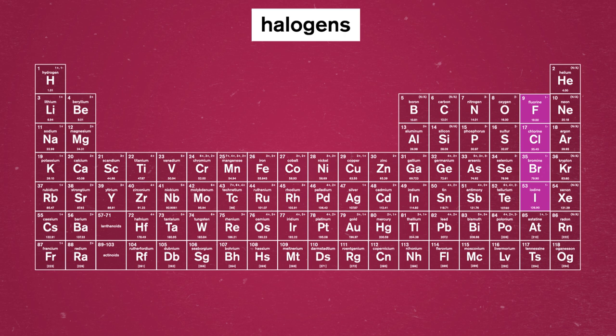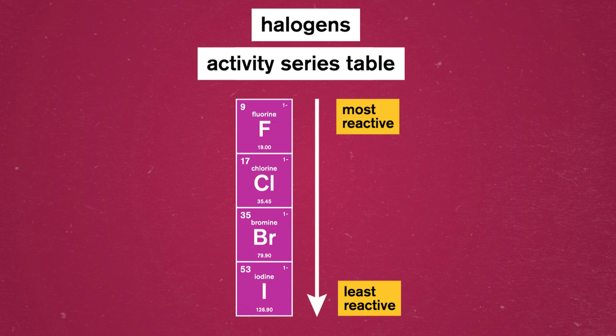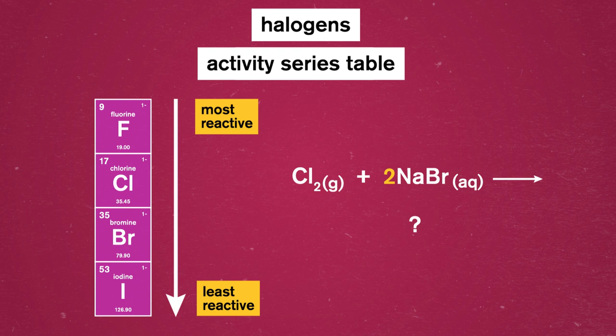Metals aren't the only class of elements to have fun tricks up their sleeves. The group of elements known as halogens also have their own activity trend, which we can view in an activity series table. This time, the more reactive halogens are at the top, decreasing in tendency to react as we go down the column. Let's say we have a reaction between chlorine gas and sodium bromide. According to the halogen column on the periodic table, chlorine is more reactive than bromine, so we can deduce that the chlorine is going to replace it as sodium significant other in the product.